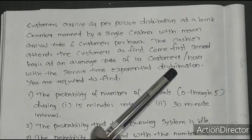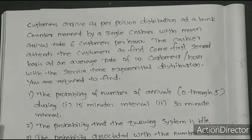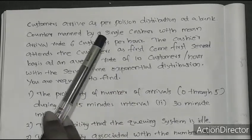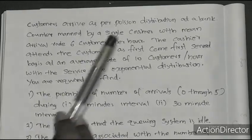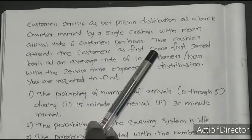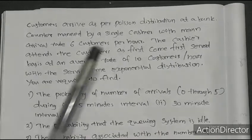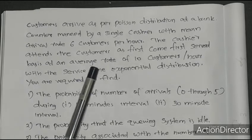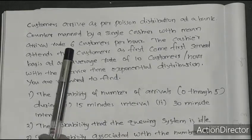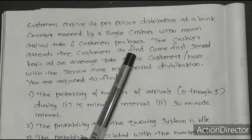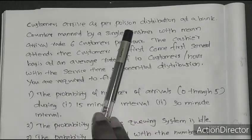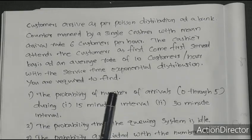This is a single cashier, single server system. The arrival rate is 6 customers per hour and the service rate is 10 customers per hour. The cashier attends customers on a first come first served basis — that is our policy and discipline. The service time follows an exponential distribution, and the arrivals follow a Poisson distribution.